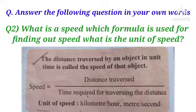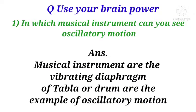Next question: use your brain power. In which musical instrument can you see oscillatory motion? So we can see musical instruments are the vibrating diaphragm of tabla or drum are the examples of oscillatory motion.